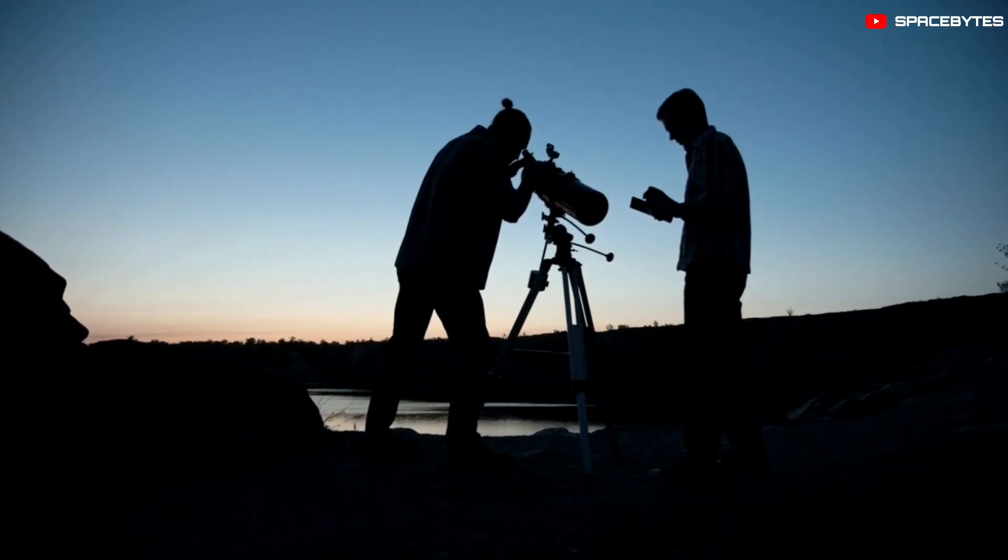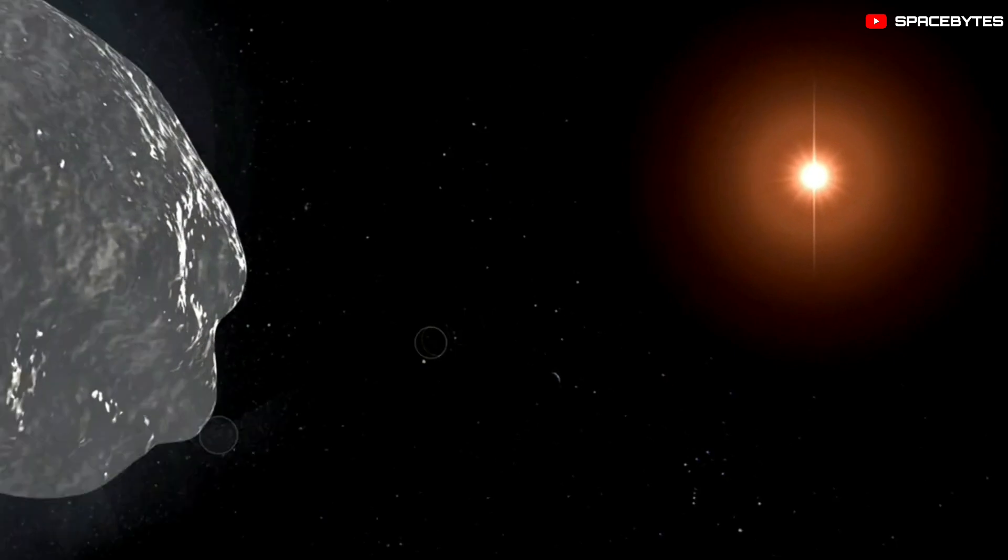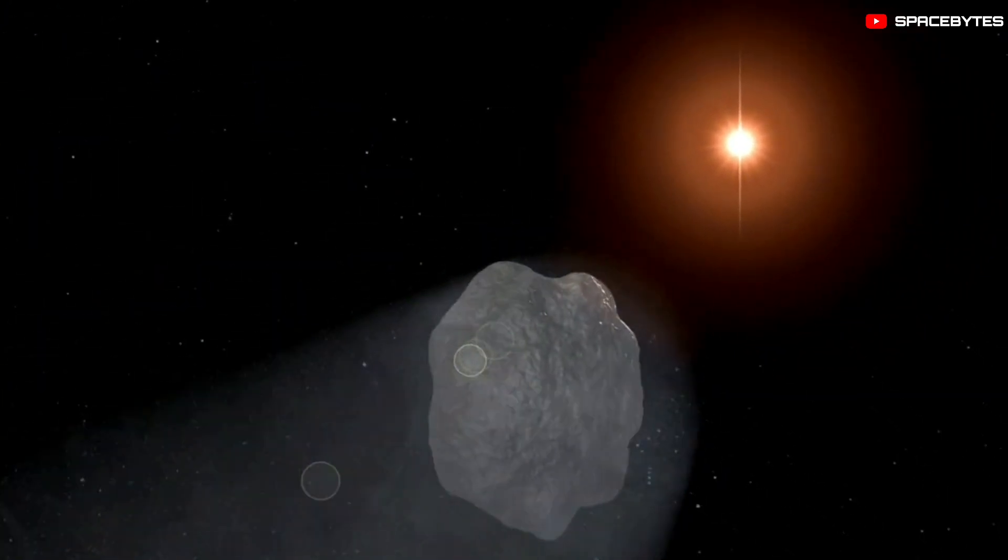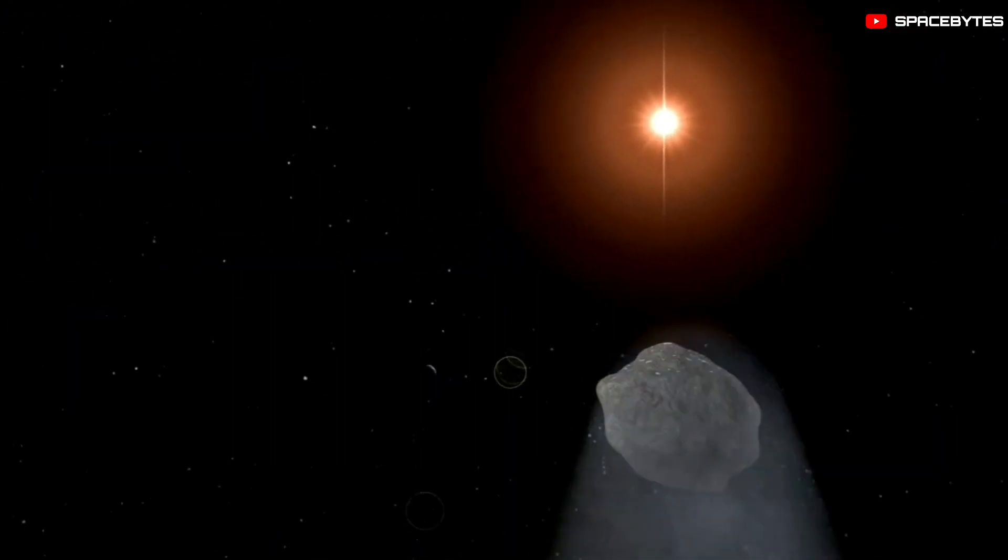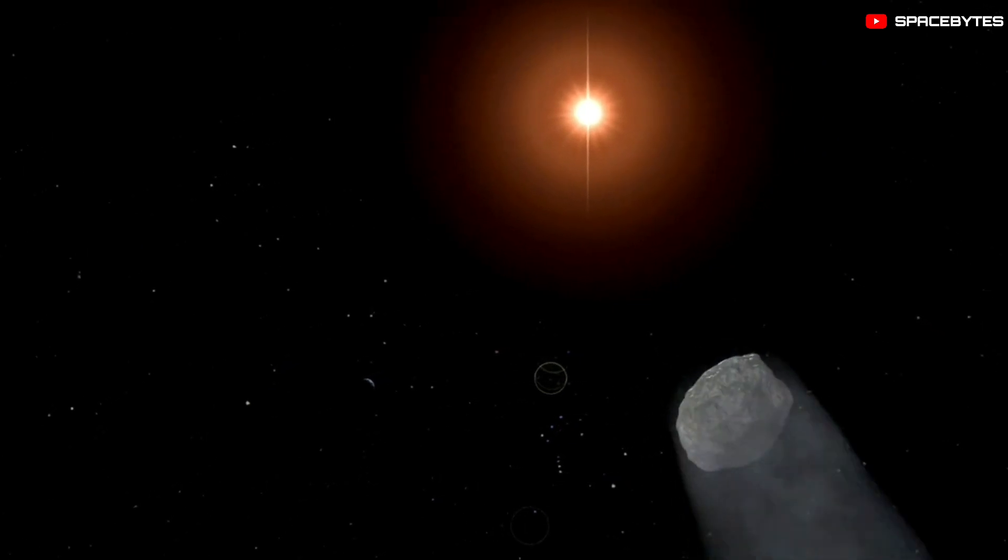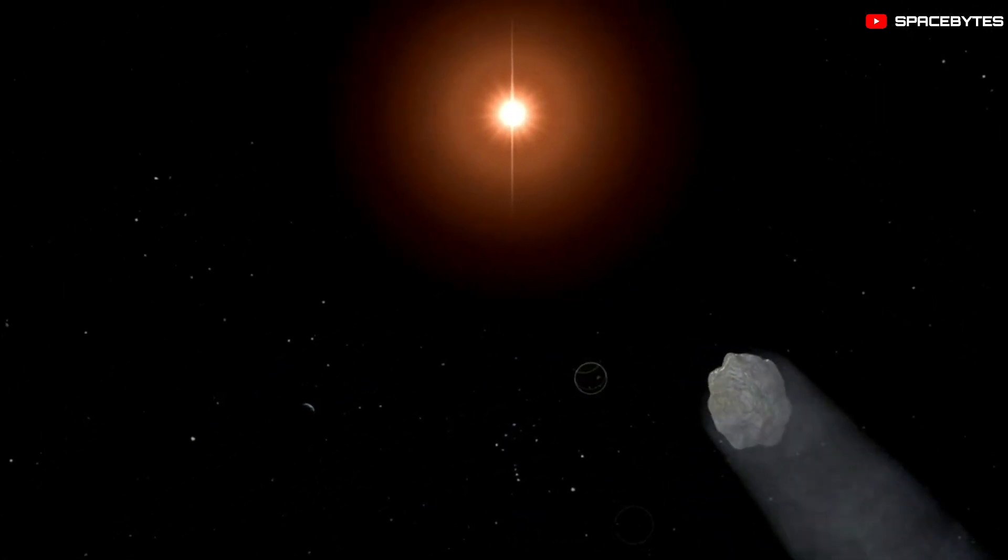You can also get your hands on a telescope and start practicing spotting objects now using an app like Stellarium, which will also be able to point your lenses in the right direction as the comet comes closer.